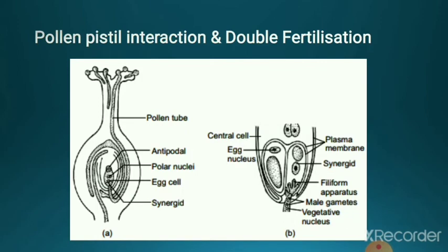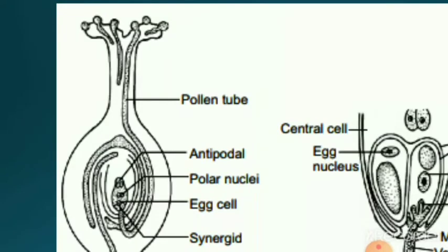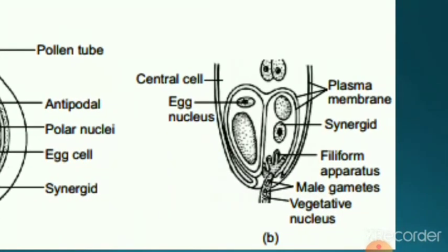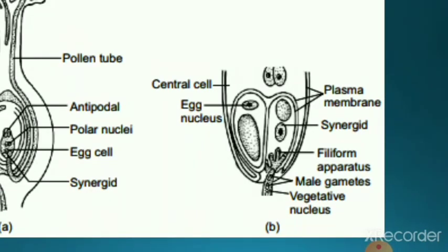As seen in the diagrams: pollen grains on the surface of the stigma form a pollen tube which reaches through the style to the embryo sac, entering through the micropylar end via the synergids. In the enlarged view, the pollen tube enters the embryo sac through the filiform apparatus where synergids are present, and one of the two male gametes fertilizes the central cell or polar nuclei while the other fertilizes the egg nucleus or egg cell.